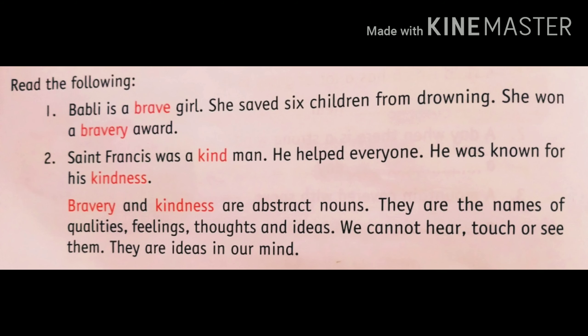So these words we only feel or think in our mind. Let's read again. Bubbly is a brave girl. She saved six children from drowning. She won a bravery award. The word bravery refers to things that we think or feel. Saint Francis was a kind man. He helped everyone. He was known for his kindness, a word that refers to things we think or feel. So bravery and kindness both are examples of abstract noun.